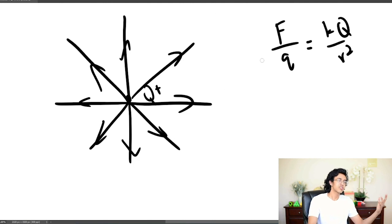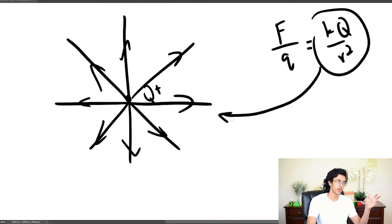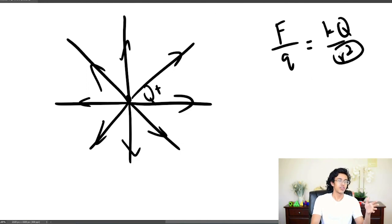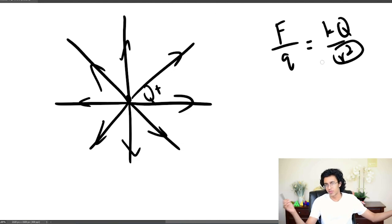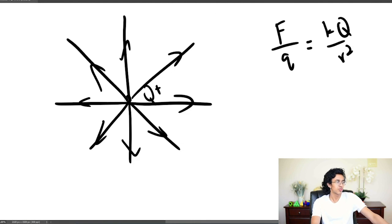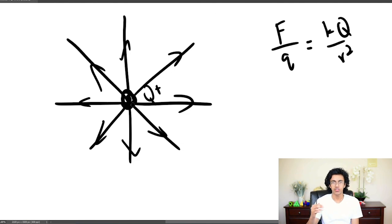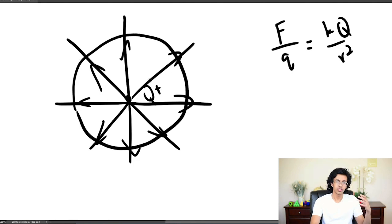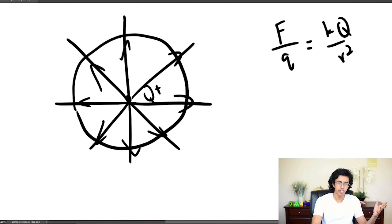Before we understand Gauss's Law, it's good to understand how this formula relates to these field lines. As you get farther away, you're decreasing the force you exert on other particles — it's like gravity. The lines are very dense close to the charge, so they exert a lot of electric field there. But farther away the same number of lines are spread over much more area, so the electric field is a lot weaker.